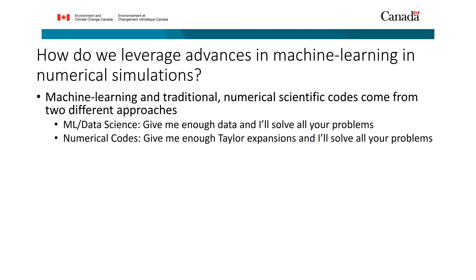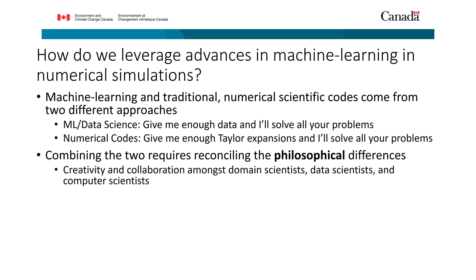In order to actually solve how we use machine learning in high performance computing and traditional numerical codes, we first have to reconcile some philosophical differences. One of the reasons our collaboration was so successful is because we got together domain scientists, data scientists, and computer scientists, and really just spent a lot of time getting to the same page — explaining the questions, how approaches might differ, how they might be the same. It was an interesting exercise where very intelligent experts in their domain had no clue what somebody else was talking about, so there was definitely some language translation involved.